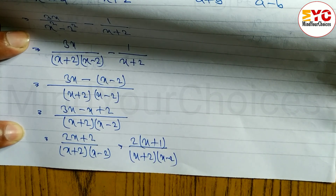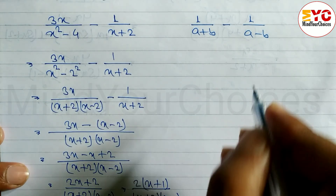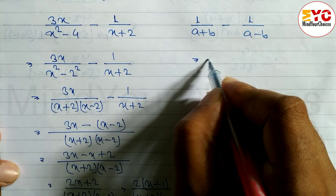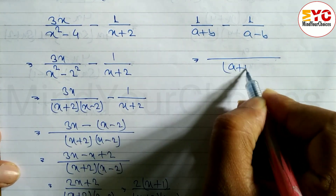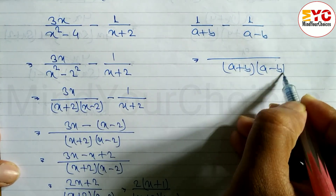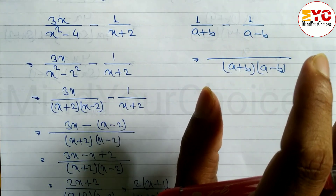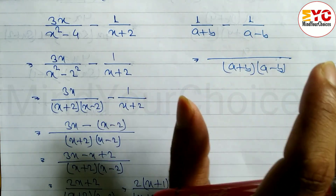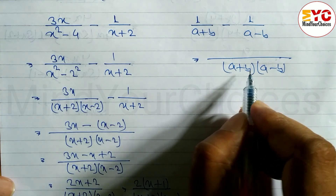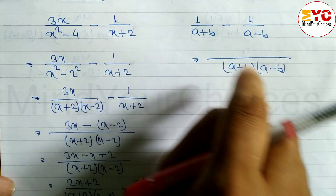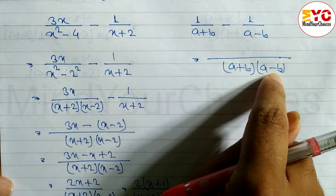Now look at the next question. What is the LCM? The LCM is (a plus b)(a minus b), because both denominators are not the same — we don't have any common elements — so we take both. After taking the LCM, we divide the denominator: (a plus b) and (a plus b) cancel, leaving (a minus b), multiplied by 1, so we write (a minus b).